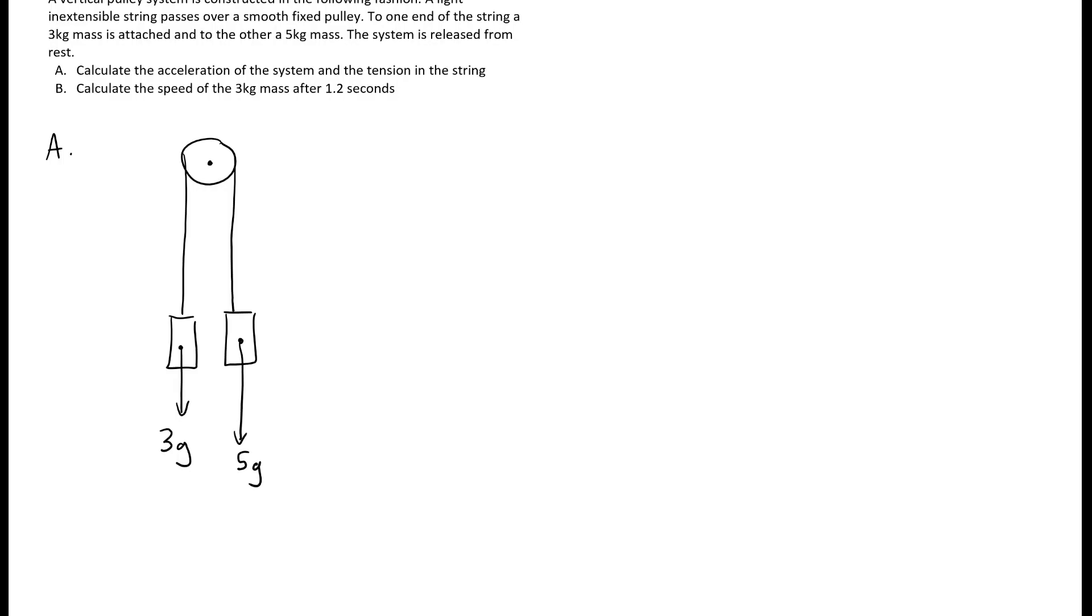Both of these are connected to the string so they both have tension acting on them. As there is only one string and the pulley is smooth, the tension is the same at both ends of the string. That's step 2.